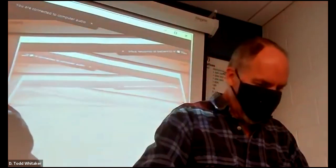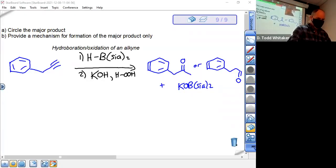We had a request to do hydroboration oxidation of an alkyne. Here's a sample question where we're supposed to circle the major product and provide a mechanism for formation of the major product. We're either making the carbonyl on the end, which would give the second product, or the carbonyl on this carbon, which would give the first product.